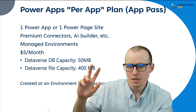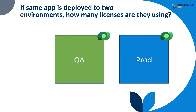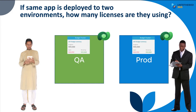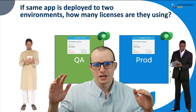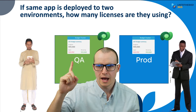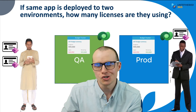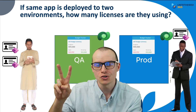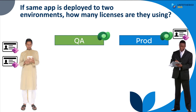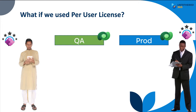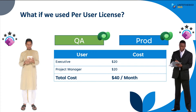What does per app mean? Let's say you have two environments: QA and Prod. In QA you have a Canvas app, and the same one in Prod. A project manager is testing in both QA and Prod, while an account executive only cares about the Prod version. The account executive needs one license; the project manager needs two licenses because there are two versions of the app. That's three licenses at $5 each — $15 a month — compared to $40 a month with the per user license.